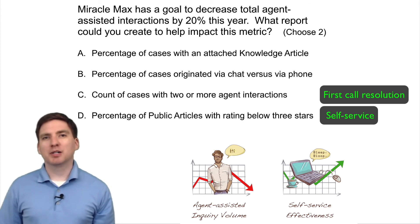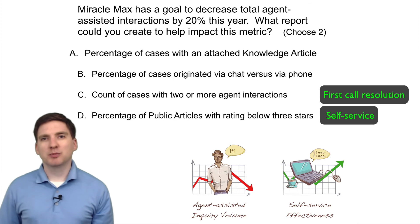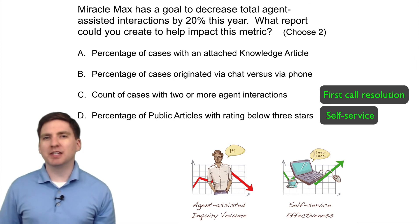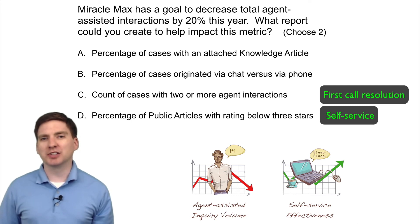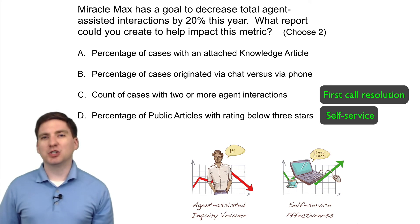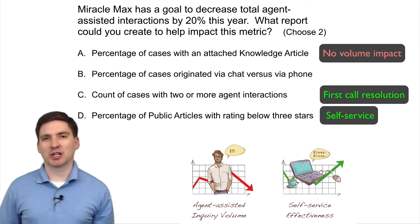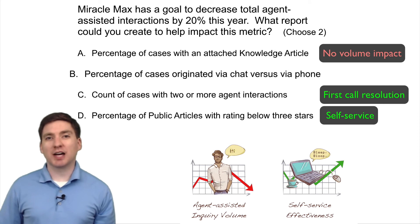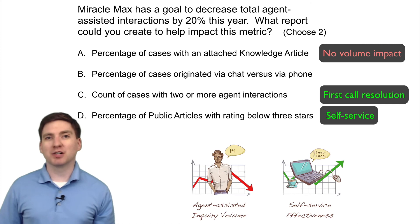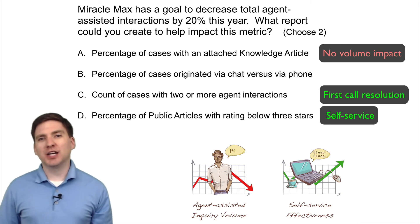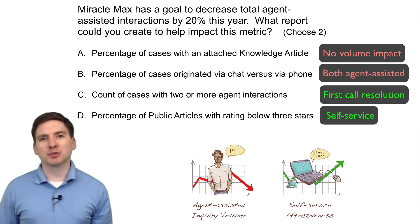The other two answers are incorrect because they don't show actionable data that could directly drive agent interaction metrics. Percentage of cases with an attached knowledge article indicates adoption of the knowledge base, but a change in that percentage doesn't necessarily indicate anything about total volume of agent-assisted interactions. Percentage of cases originated via chat versus phone would be useful if Max was trying to drive customers toward one channel, but chat is still agent assisted — we should be more interested in how often customers are serving themselves via web.